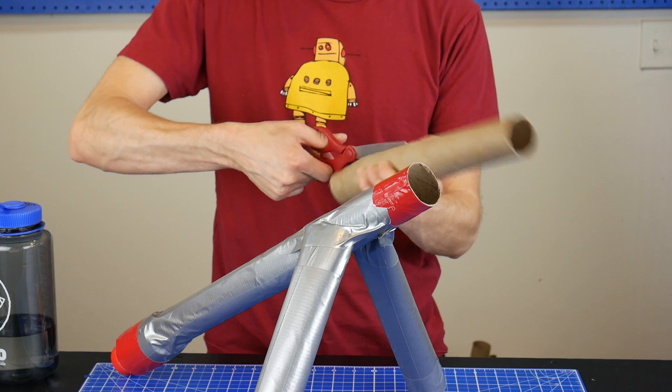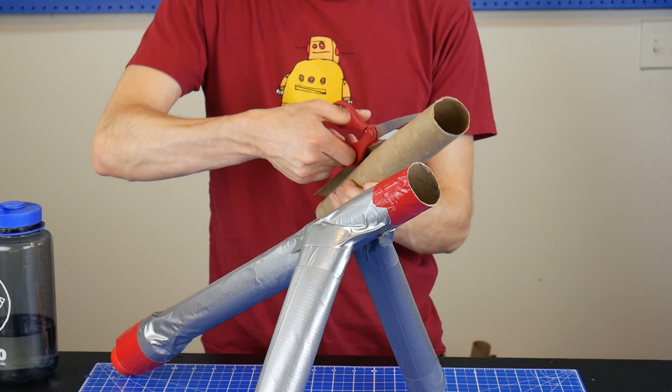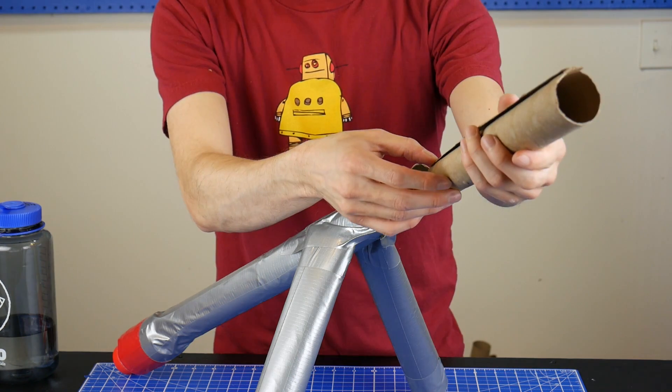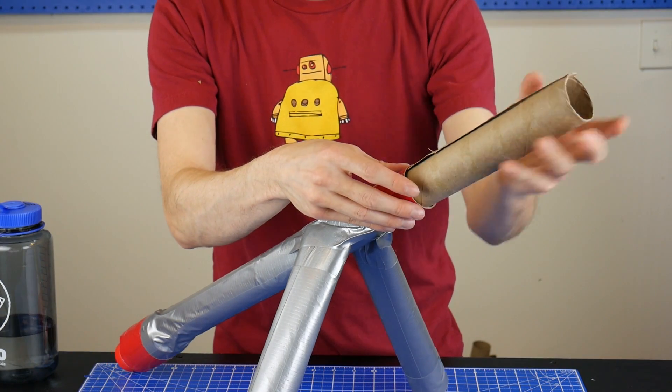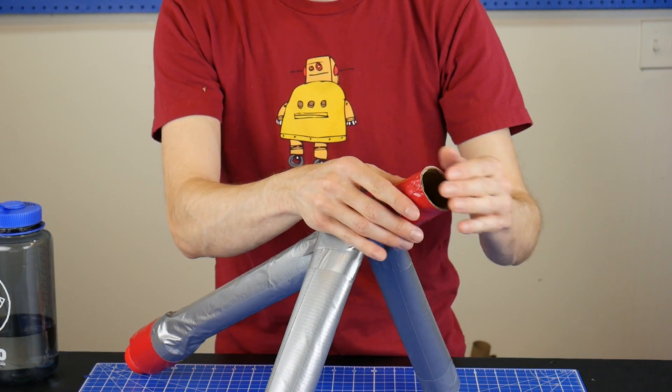If the barrel is too big and there's a lot of space around the ping pong ball, it won't work very well. You can narrow the inner diameter of the barrel by cutting another tube down the middle and fitting it inside.